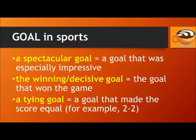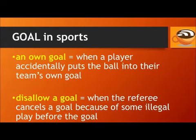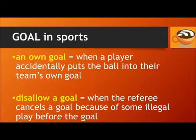The winning goal, or the decisive goal, means the goal that won the game. And a tying goal is a goal that made the score equal, for example, two to two. If a soccer player scores an own goal, that means the player accidentally put the ball into their team's own goal, so it's a point for the other team. If the referee disallows a goal, it means the referee cancels the goal because of some illegal play before the goal was scored.